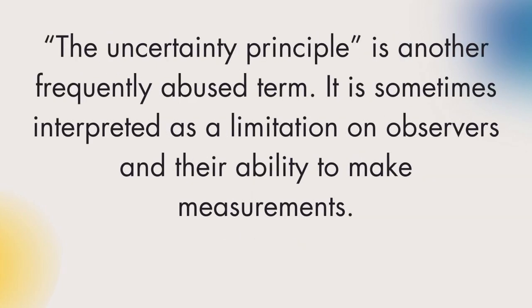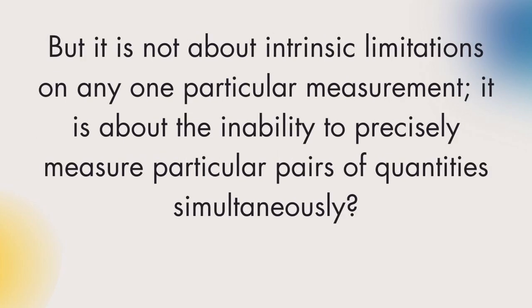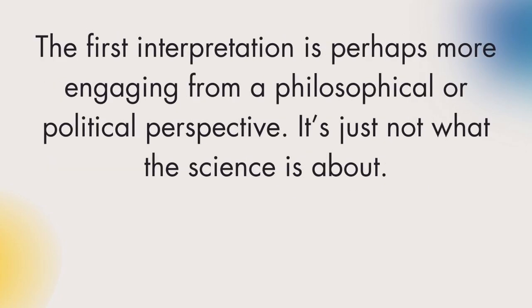The uncertainty principle is another frequently abused term. It is sometimes interpreted as a limitation on observers and their ability to make measurements. But it is not about intrinsic limitations on any one particular measurement; it is about the inability to precisely measure particular pairs of quantities simultaneously. The first interpretation is perhaps more engaging from a philosophical or political perspective — it's just not what the science is about.